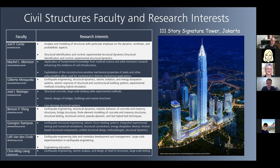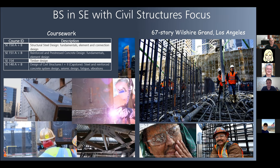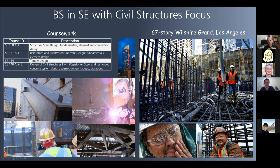For undergrads we have SE 150 A and B where you learn about structural steel — prefabricated steel pieces welded together in the field. In this class you'll learn about what a weld is, the pros and cons of welding, whether to use bolted connections instead, and framing systems. You can also see bolted bracing — this is the Wilshire Tower, the tallest building west of the Mississippi in downtown Los Angeles, also designed by Len Joseph.